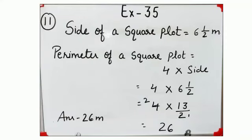Side of a square plot is given and you have to find perimeter. The formula is 4 multiply side. 4 multiply 6 and 1 by 2. Convert 6 and 1 by 2 into improper fraction. 2 times 6 is 12 plus 1 is 13, 13 upon 2.